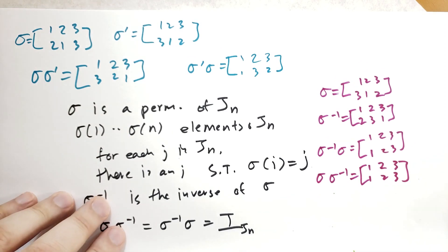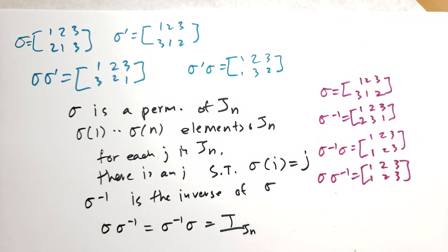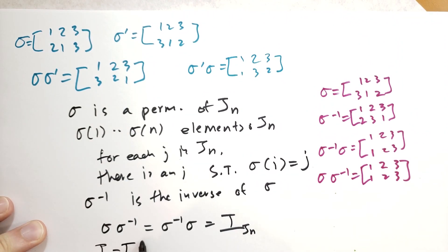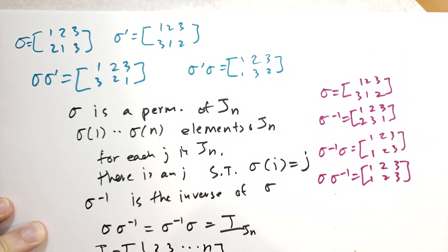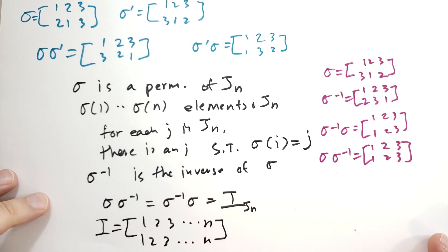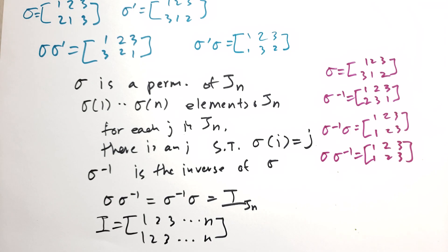The identity permutation is always defined simply: the identity maps [1, 2, 3, ..., N] to [1, 2, 3, ..., N]. That shouldn't be surprising at all — it's fairly straightforward.